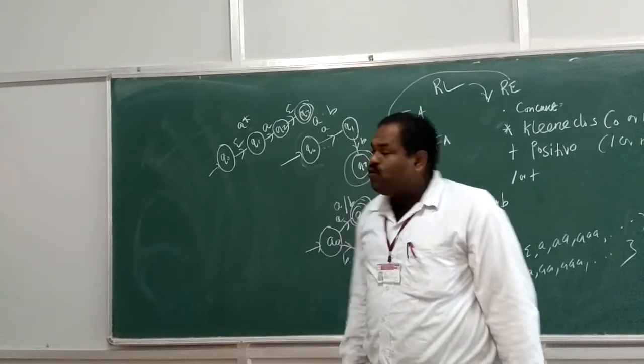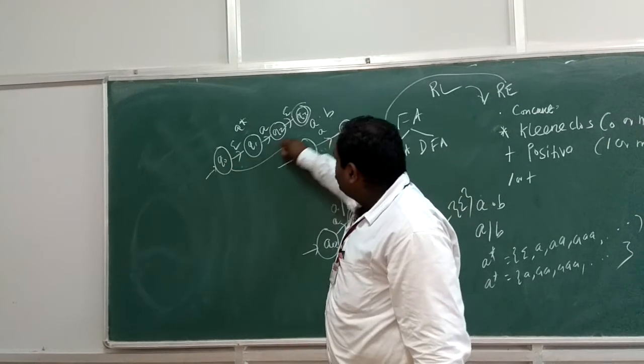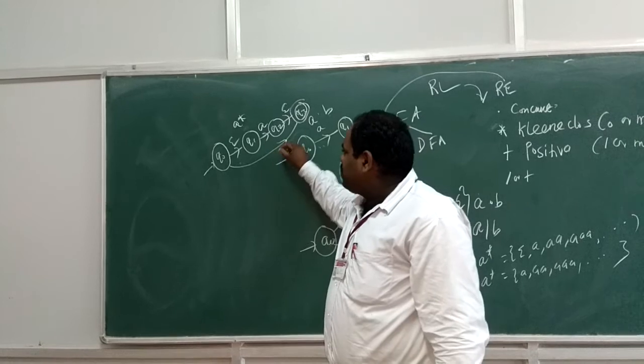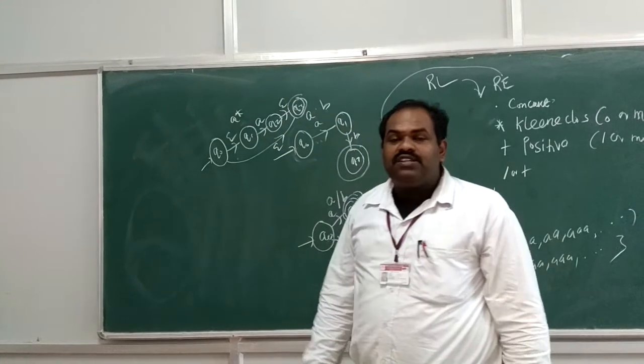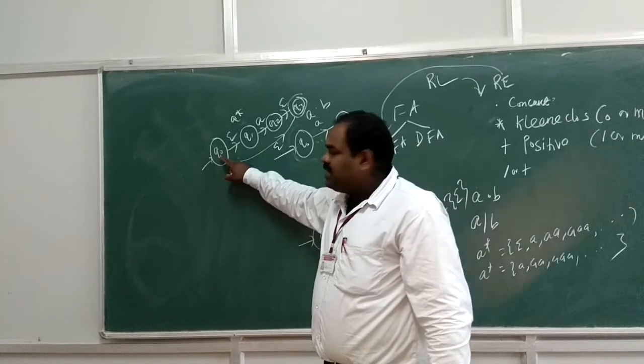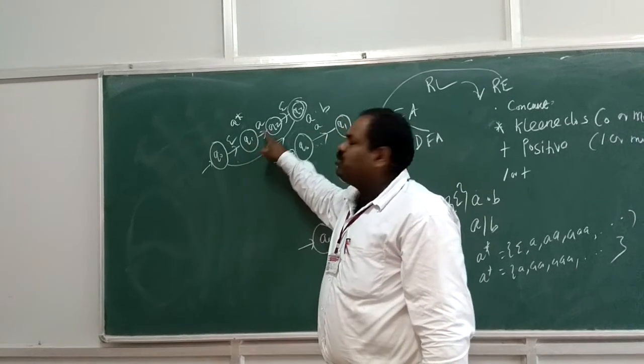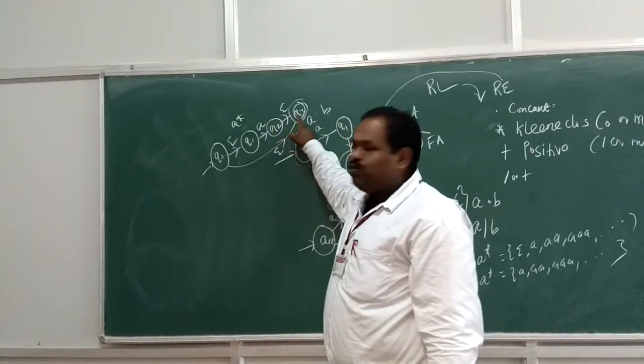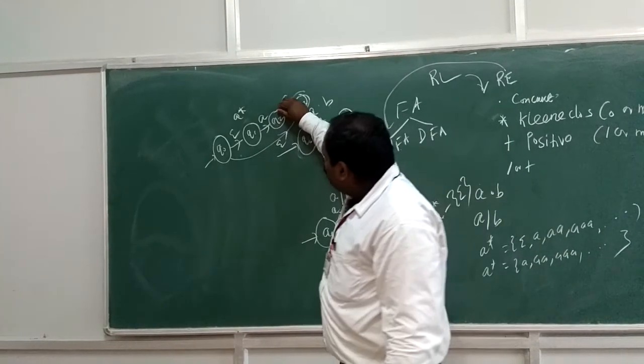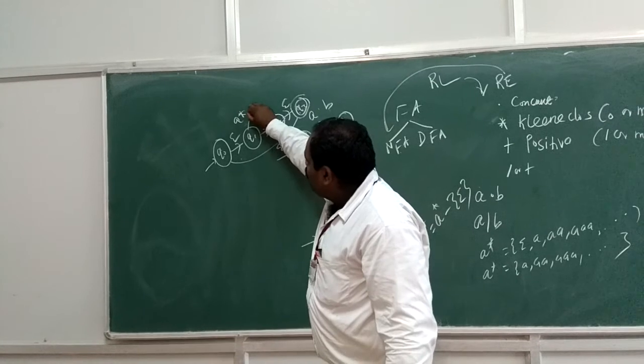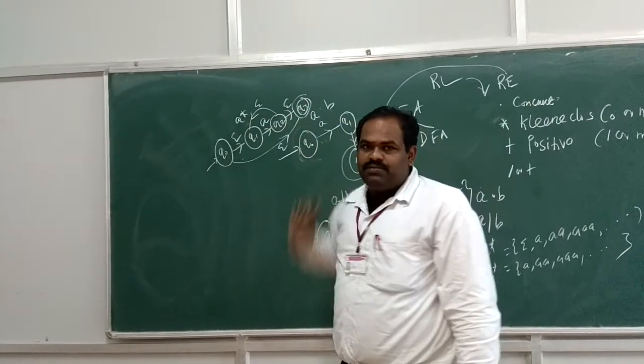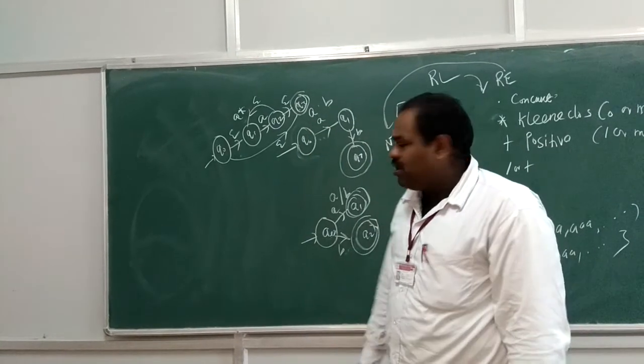You have the zero or more. So it directly goes from Q0 to Q3, read with the same input of epsilon. That is for zero times. If A has the one times, it reads Q0 to Q1, Q1 to Q2, then Q2 to Q3. Now the A can be in terms of multiplicity. So from Q2 to Q1, we can have the epsilon. Now it may have the multiplicity. This is for NFA, the finite automaton.